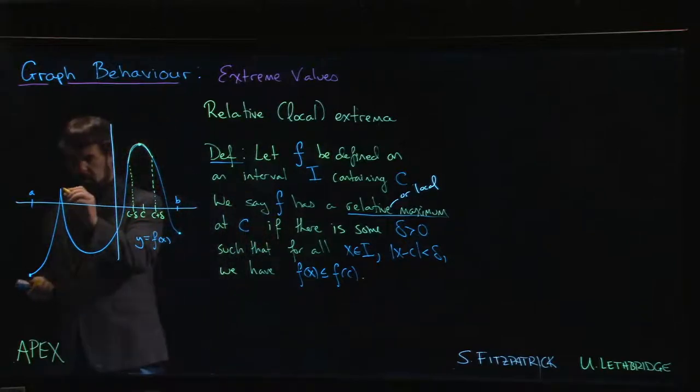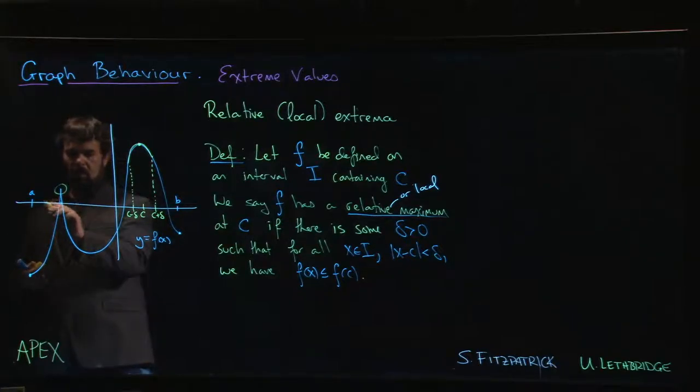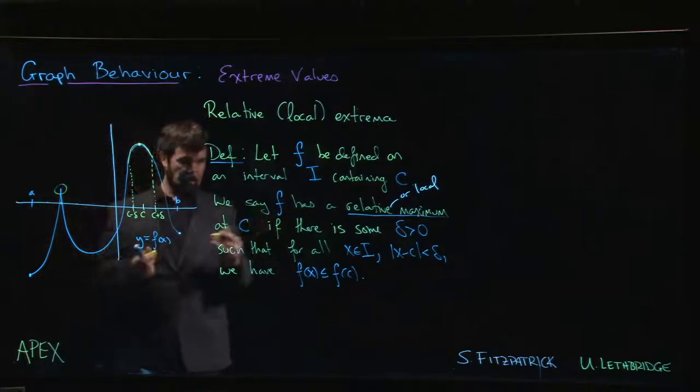But there are other points on the graph that we might also consider to be a relative maximum, and there's one here. At this point, if I'm a little bit on either side of that point, there is no other point on the graph where the y value is larger. As long as I can find some interval around that point where it's the largest y value that I see, I'm dealing with a relative max.